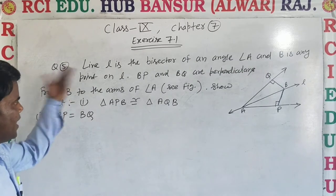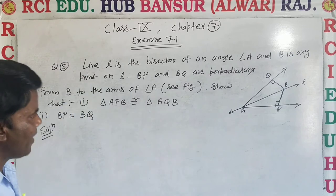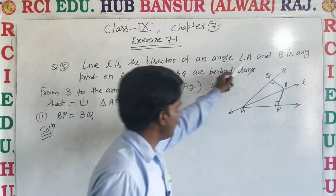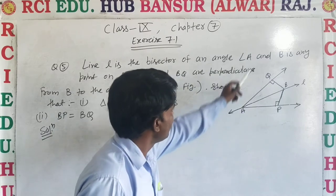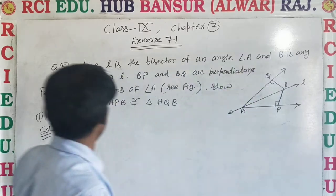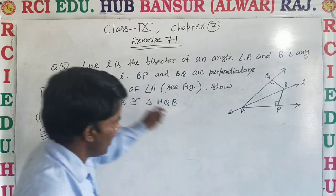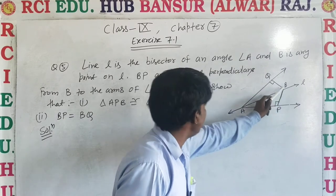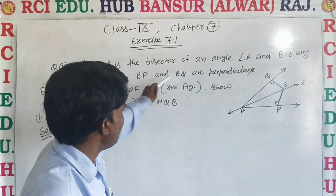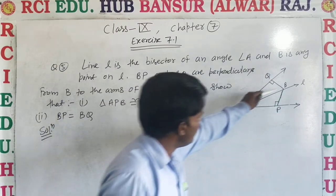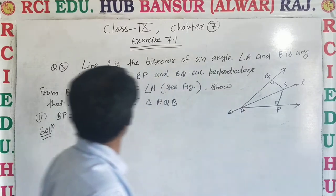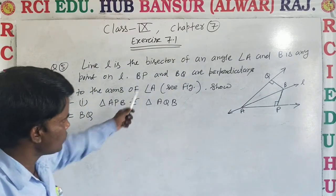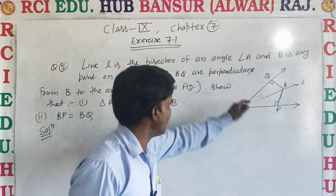Question Number 5: Line L is the bisector of angle A, and B is any point on L. BP and BQ are perpendiculars from B to the arms of angle A. See figure.